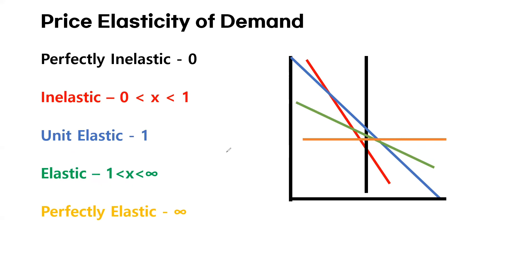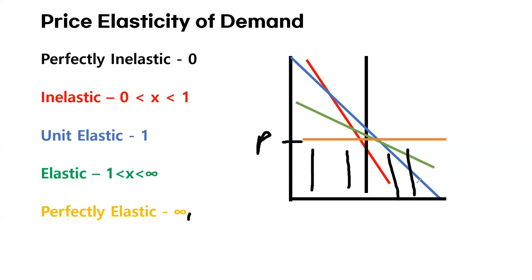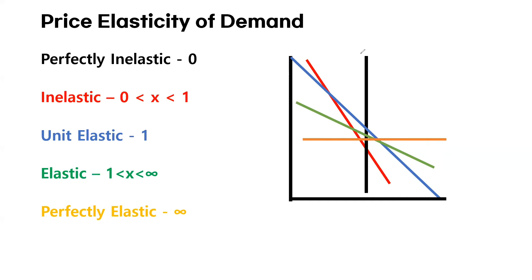The fifth concept is perfectly elastic, and we say a certain demand is perfectly elastic if the calculated elasticity is infinite. Take a look at this orange line — the price didn't actually change; the price is constant. However, you can see that the quantity shifts. This isn't actually very common, but it can happen in certain circumstances.